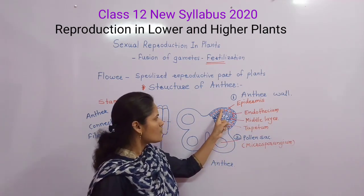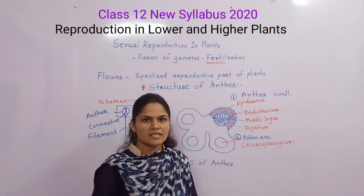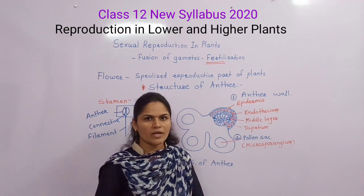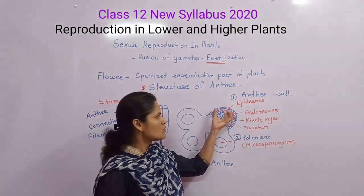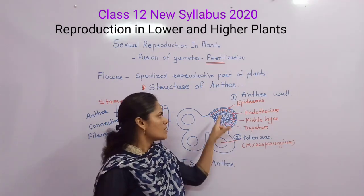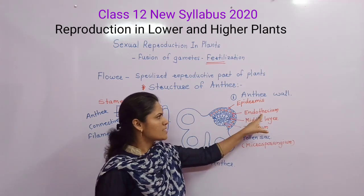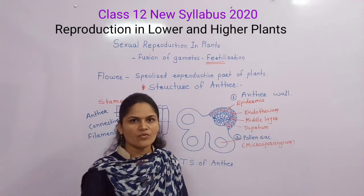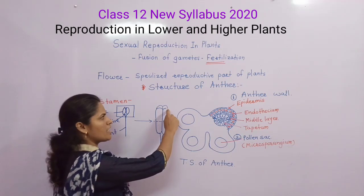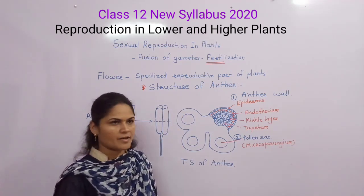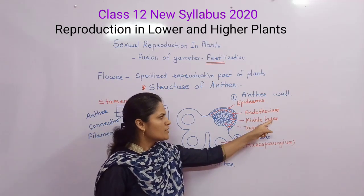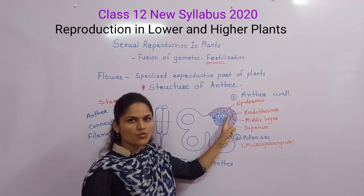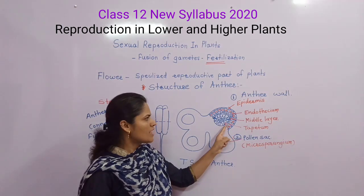Endothecium consists of fibrous thickenings with special characteristics — it is hygroscopic in nature, meaning it has the ability to hold water. The function of endothecium is that it helps in the dehiscence of the anther, meaning it helps pollen grains to be released outside. The third layer is the middle layer.